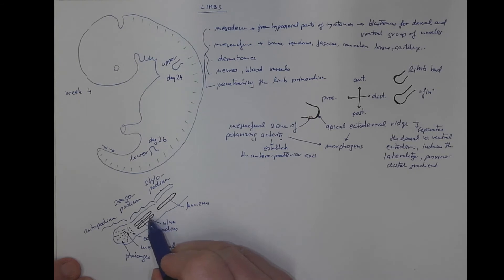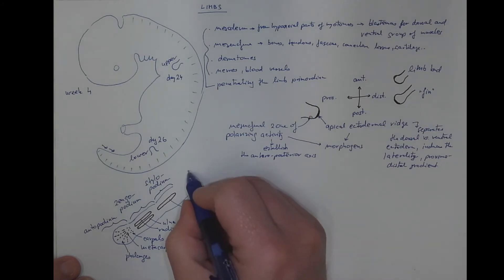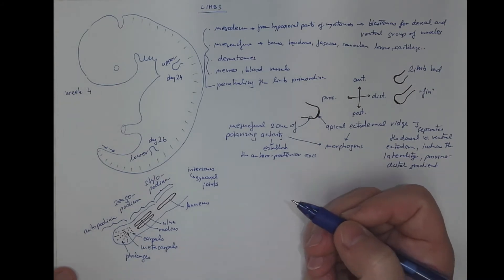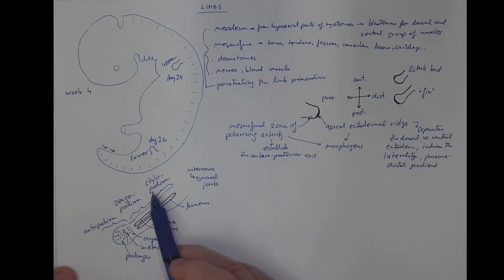The interzones between these pieces of cartilage form the synovial joints. In the lower limb the stylopodium would be formed by the femur bone, the zugopodium of a lower limb is formed by the tibia and fibula, and the autopodium by the phalanges, metatarsal bones and tarsal bones.